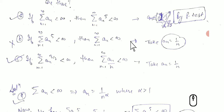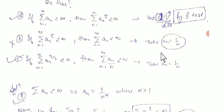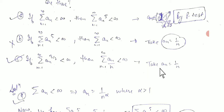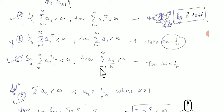For the second option: if aₙ^5 converges, then we check whether the series of aₙ converges. We can directly show a counterexample: if aₙ = 1/n, then the series of aₙ^5 is convergent (since 1/n^5 converges), but the series of 1/n is divergent. For the third option, take aₙ = 1/n^(3/2), which gives aₙ^5 = 1/n^(5/2), and both are convergent.